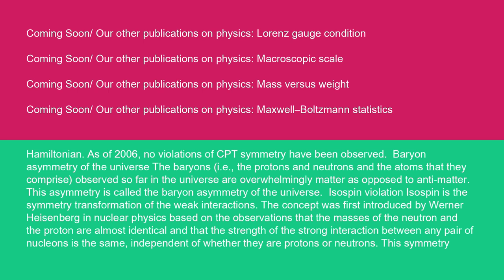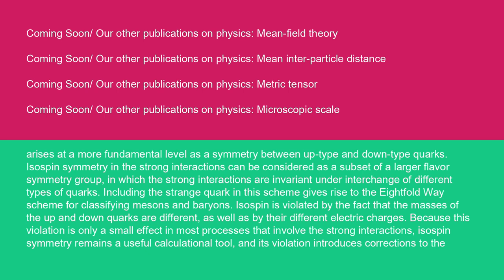Isospin violation. Isospin is the symmetry transformation of the weak interactions. The concept was first introduced by Werner Heisenberg in nuclear physics based on the observations that the masses of the neutron and the proton are almost identical and that the strength of the strong interaction between any pair of nucleons is the same, independent of whether they are protons or neutrons. This symmetry arises at a more fundamental level as a symmetry between up-type and down-type quarks. Isospin symmetry in the strong interactions can be considered as a subset of a larger flavor symmetry group in which the strong interactions are invariant under interchange of different types of quarks. Including the strange quark in this scheme gives rise to the eightfold way scheme for classifying mesons and baryons. Isospin is violated by the fact that the masses of the up and down quarks are different as well as by their different electric charges. Because this violation is only a small effect in most processes that involve the strong interactions, isospin symmetry remains a useful calculational tool and its violation introduces corrections to the isospin symmetric results.